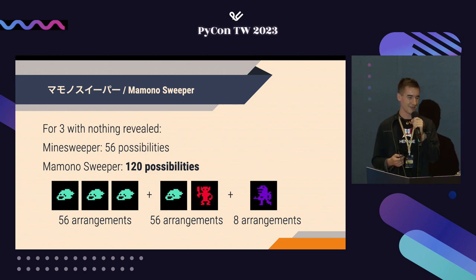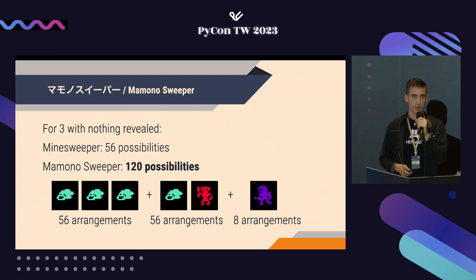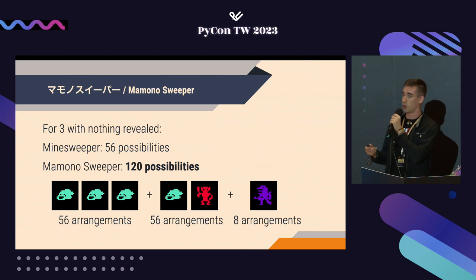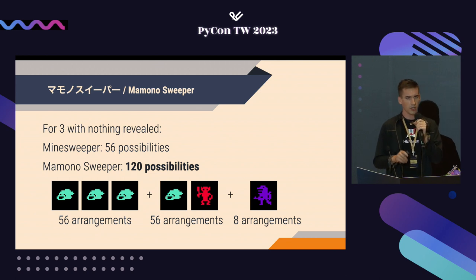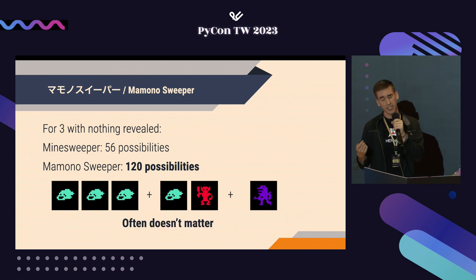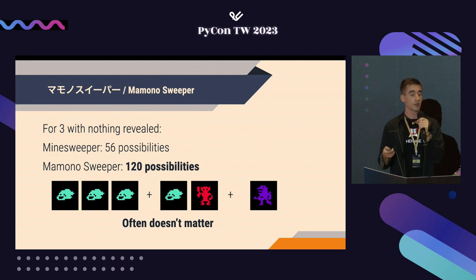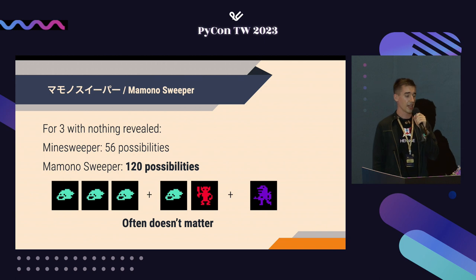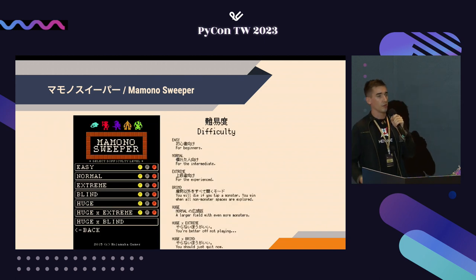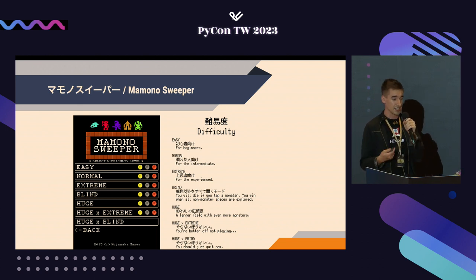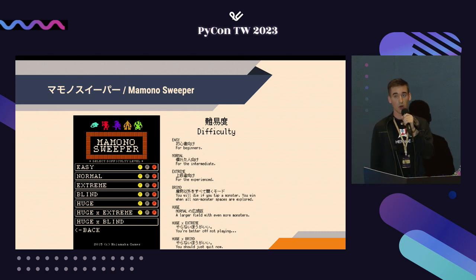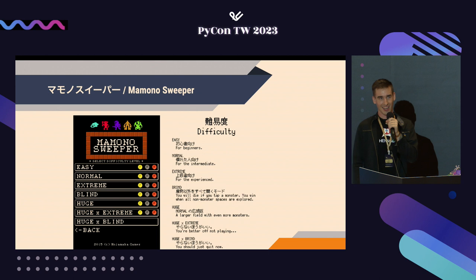This is where the difficulty and fun come in. If you see a three without anything else around it, compared to Vanilla Minesweeper's 56 possibilities, Mamino Sweeper has 120 — it could be made up of all level ones, a level one and a level two, or a single level three. These permutations are where the difficulty comes in. In one sense, this game is harder than Minesweeper. But in another, it's much easier, because if you're level three or above, you can simply click all of those tiles, reveal information, kill some monsters, gain some EXP, and reduce the overall uncertainty of the board.